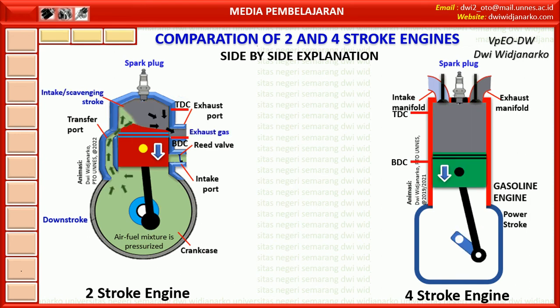The piston continues to move down towards bottom dead centre. In the 4 stroke engine, the downward movement causes the cylinder volume to increase and the pressure of the combustion gases to decrease. In the 2 stroke engine, the piston also moves down, the volume of the combustion chamber increases, and the pressure decreases. When the piston passes the exhaust port, combustion gases exit through the exhaust port. At the same time, the transfer port starts to open. The air fuel mixture in the crankcase, which has high enough pressure, flows into the transfer port and enters the cylinder. The remaining combustion gas is pushed out through the exhaust port by the new gas.